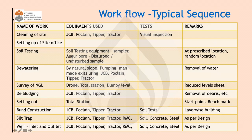A typical construction sequence table shows: for cleaning of site, equipment used can be a JCB, co-plane, dipper, tractor, among others. For testing, a visual inspection is recommended to check whether the site is cleaned. Then there is setting up of a site office — there will be engineers working there, people staying most of the day — so you need a site office for keeping records, daily meetings, and for the engineers to work from.